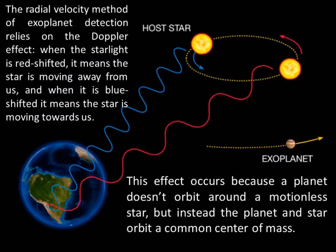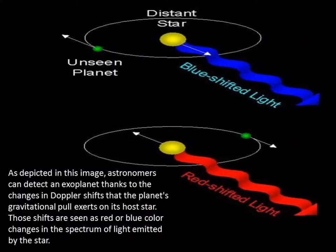The radial velocity method of exoplanet detection relies on the Doppler effect. When the star light is redshifted, it means the star is moving away from us. And when it is blue shifted, it means the star is moving towards us. This effect occurs because a planet doesn't orbit around a motionless star, but instead the planet and star orbit a common center of mass. Astronomers can detect an exoplanet thanks to the change in Doppler effect that the planet's gravitational pull exerts on its host star.